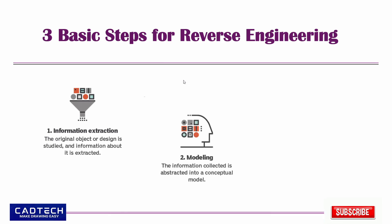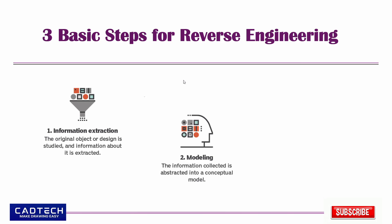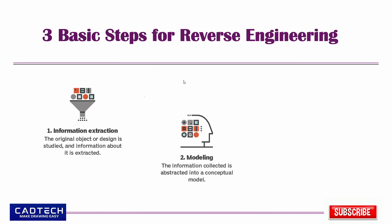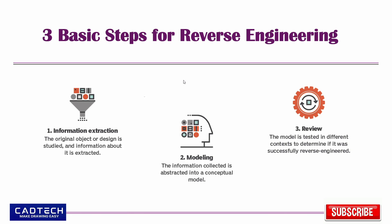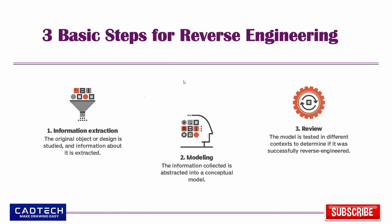Step 2 — Modeling: abstract collected data into a conceptual model representing the function and structure of the system. Step 3 — Review: test and review the model to ensure accuracy, then use it to engineer the original object.